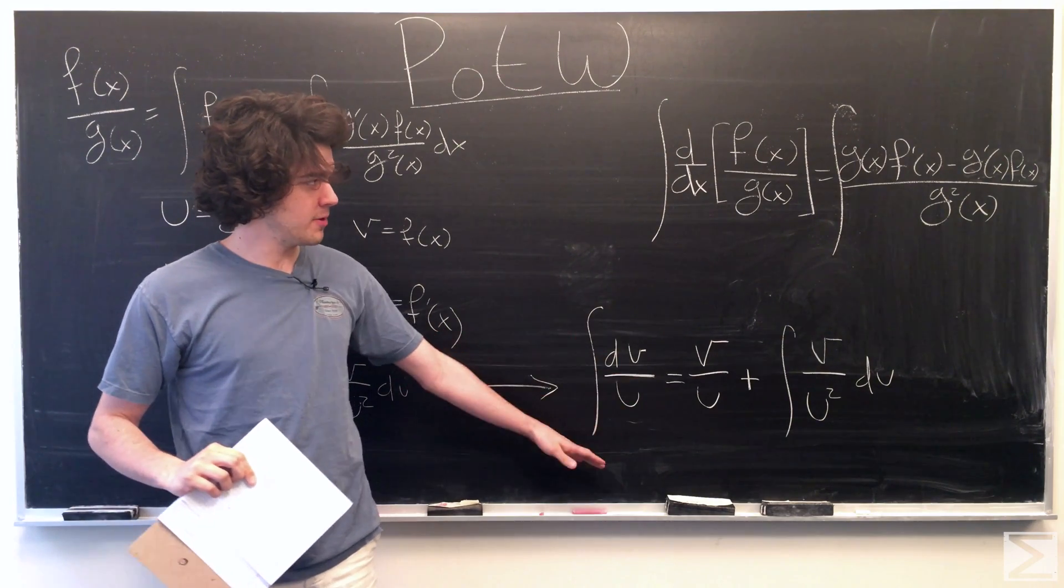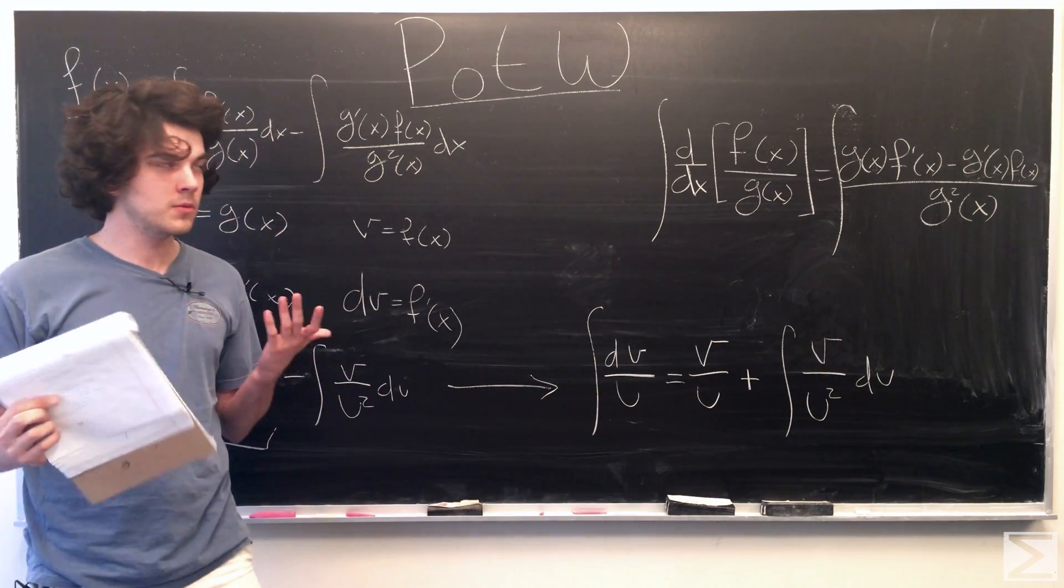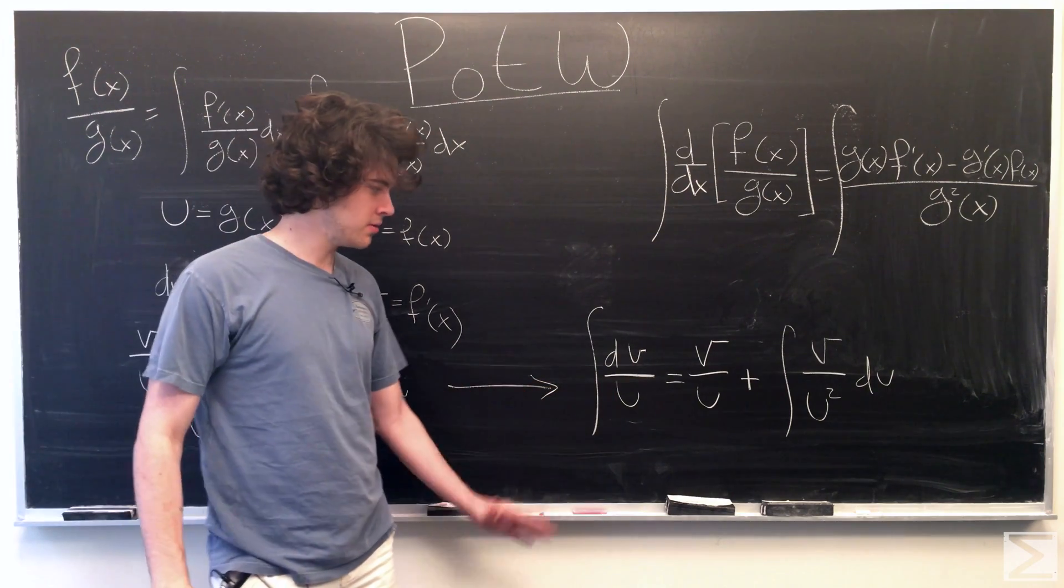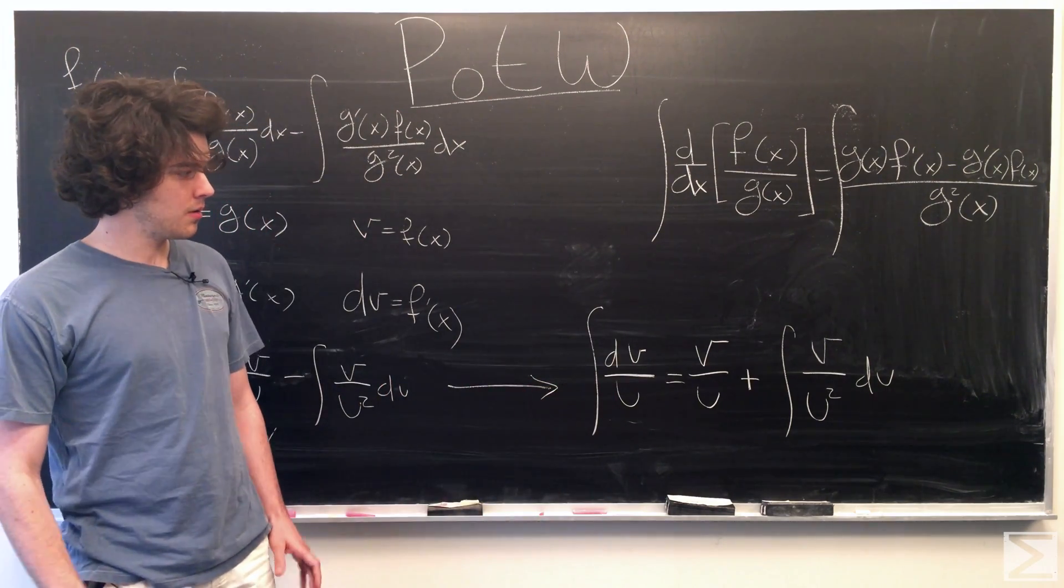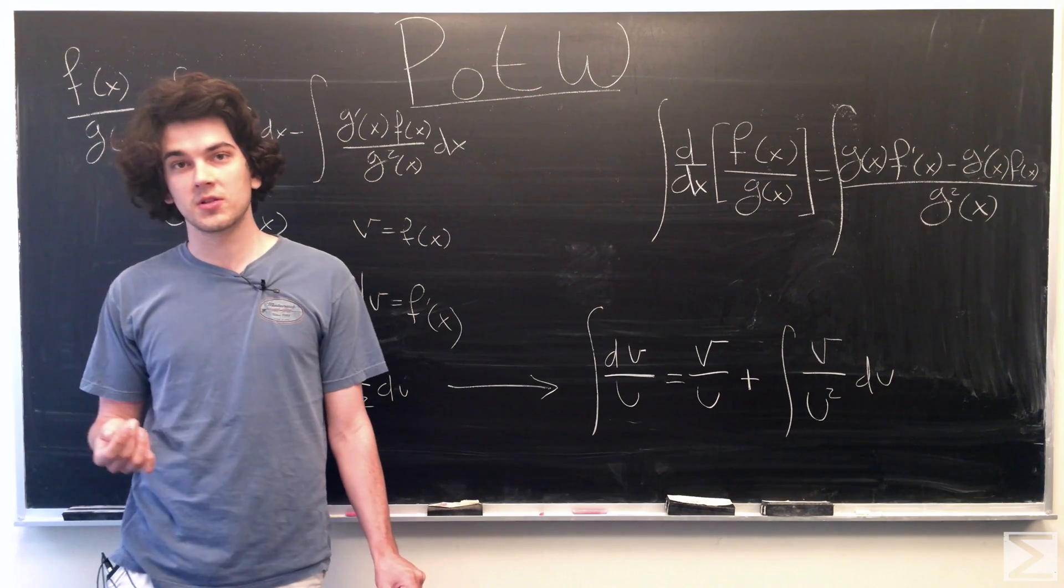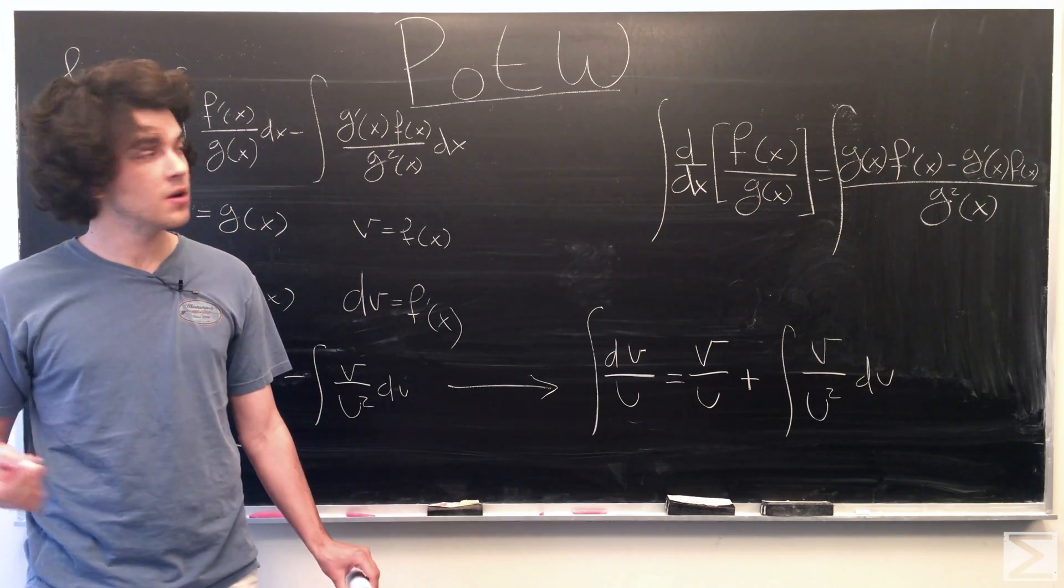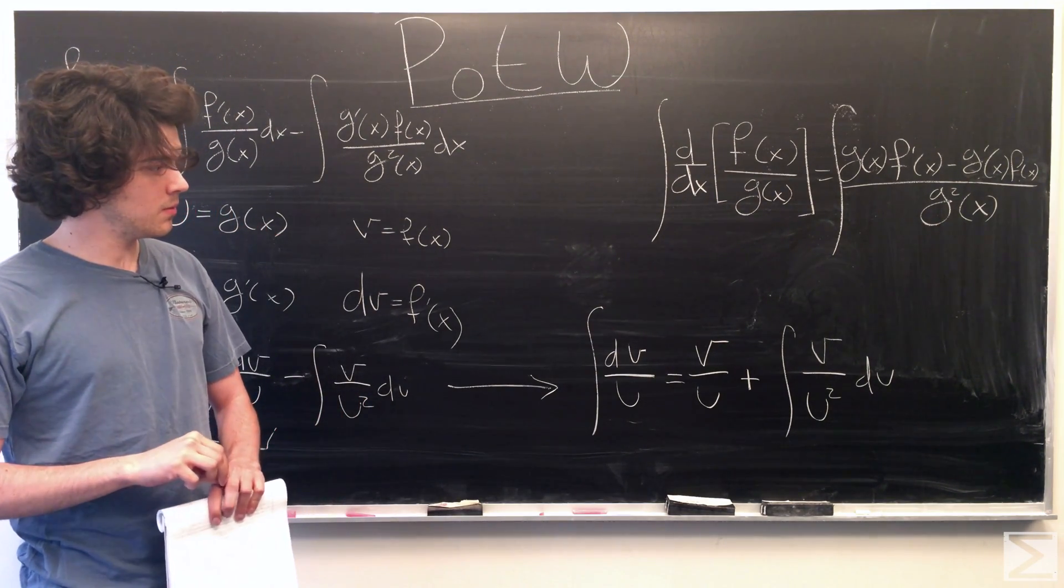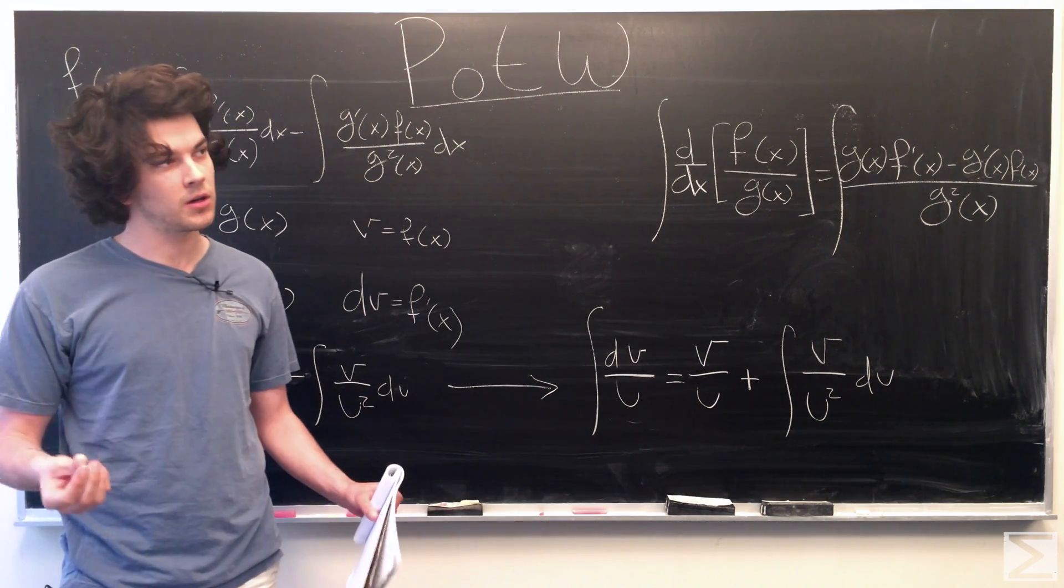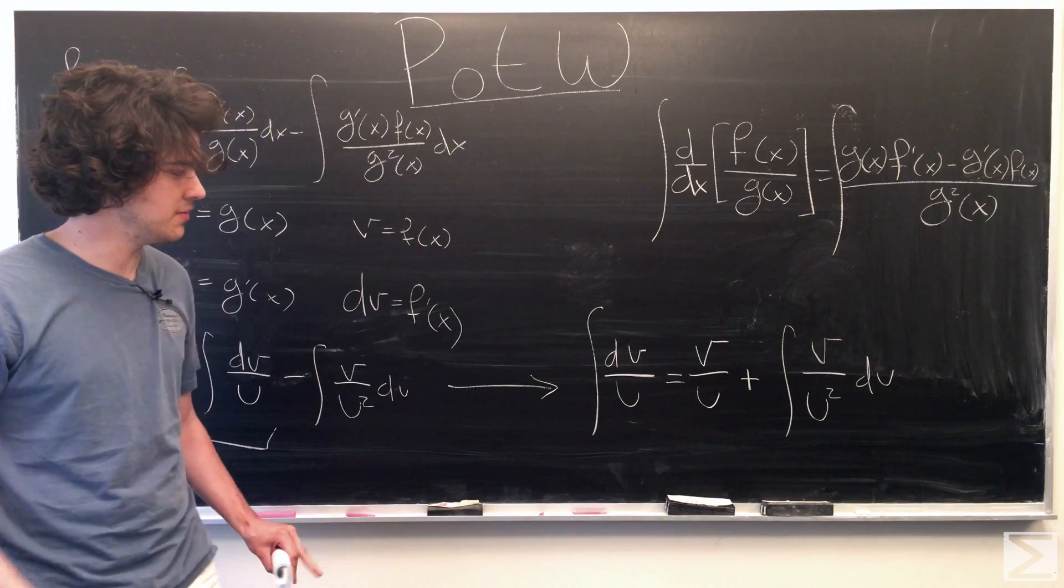So, this is our anti-differentiation formula for the quotient rule. And you notice it kind of looks a little similar to our product rule anti-differentiation formula, which is just your standard integration by parts. But, we're going to look at what happens when we have 1 over u is equal to our u prime, and we have just regular dv.